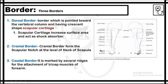The cranial border does not extend to the ventral part of the bone; therefore it forms a scapular notch at the level of the neck of the scapula. The caudal border is marked by several ridges for the attachment of the triceps muscle.